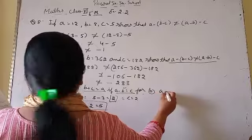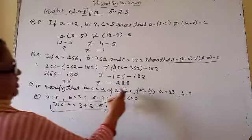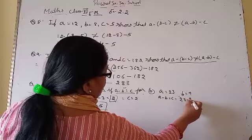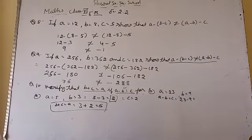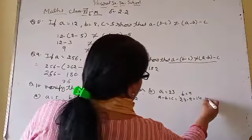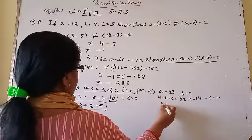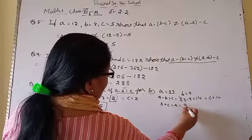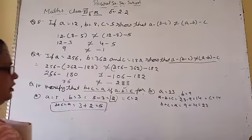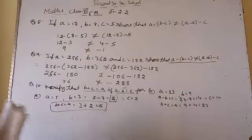Part (b): a is equal to 23 and b is equal to 9. पहले c की value निकालते हैं — a minus b is equal to c: 23 minus 9 = 14, तो c is equal to 14. अब verify करते हैं — b plus c is equal to a: 9 plus 14 is equal to 23. देख लो 14 और 9 कितना हो गया — 23 हो गया। So we have done question number 8, 9 and 10.